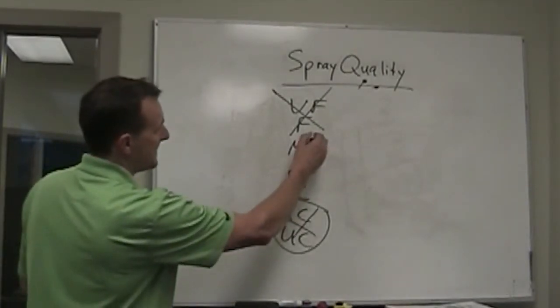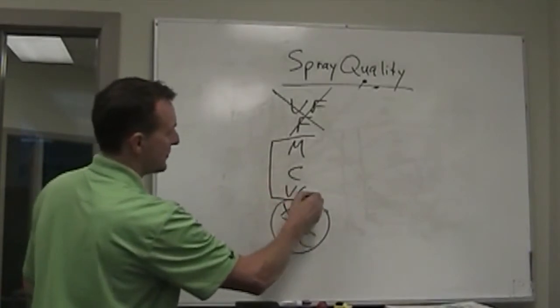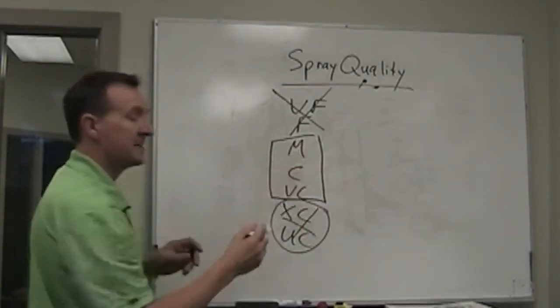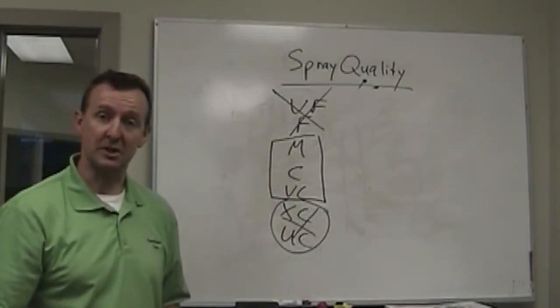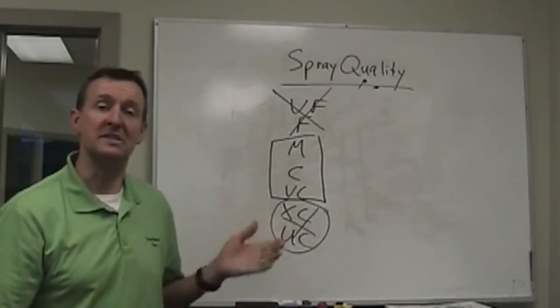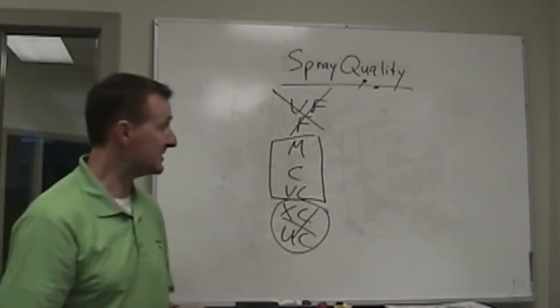The bread and butter of agriculture is right here. We're talking with medium, coarse, and very coarse sprays. And these are the ones that we should be focusing on. We should be choosing nozzles that produce these kinds of spray qualities at the pressures which we expect to use.